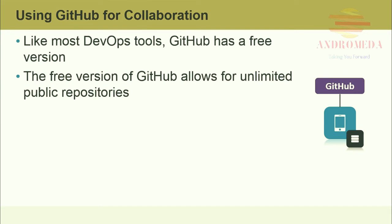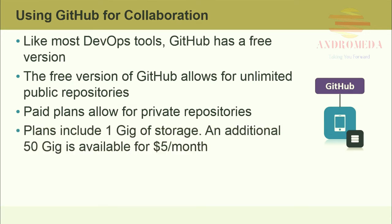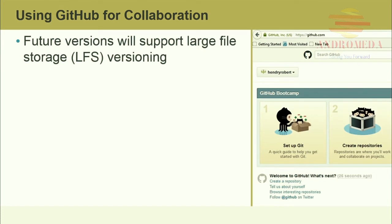Public repositories can be viewed by anyone, while private repositories can only be seen by you and your collaborators. The number of private repositories available is determined by your pay plan. Plans include 1 gig of storage, and an additional 50 gig is available for $5 a month. GitHub runs everywhere — most traditional and mobile platforms are supported. All GitHub users automatically get a personal account, and as projects get larger, individual accounts can transfer into an organization account as your project adds collaborators. Future versions will support large file storage, LFS versioning.